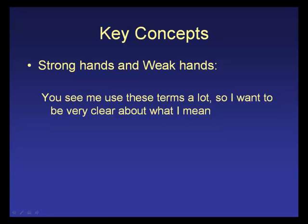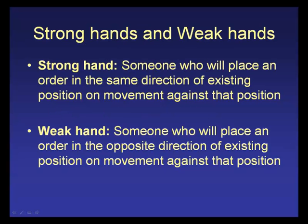Key concepts: strong hands and weak hands. A strong hand — if they're long and their position goes against them, they're a buyer of more. A weak hand is the opposite: if their position goes against them, they're a seller if long. If they're short, they cover on a rally rather than short more. A strong hand shorts more on a rally if they're short.